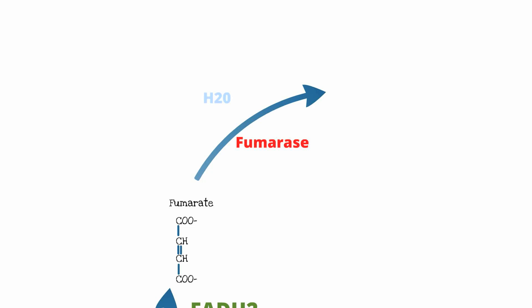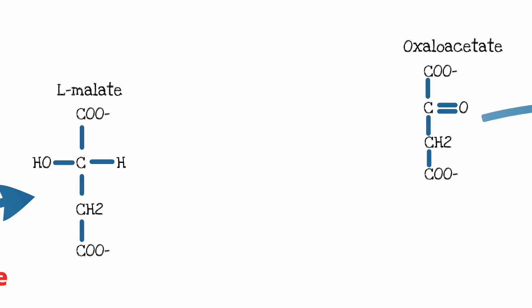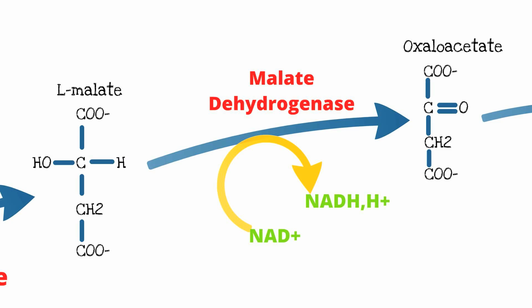Fumarate is converted to L-malate by the enzyme fumarase with consumption of a water molecule. Finally, L-malate is converted to oxaloacetate by malate dehydrogenase. In the process, NAD picks up two hydrogen atoms, creating the third NADH of the cycle. With oxaloacetate produced, the cycle begins again.